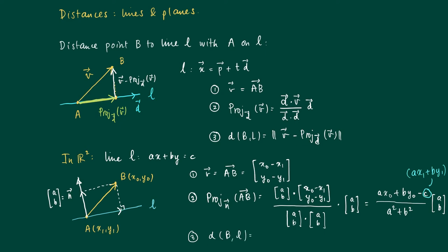Therefore we can calculate the distance of the point B to L as the length of the projection of AB on the normal vector N, which is the length of this vector. This equals the absolute value of A X zero plus B Y zero minus C divided by the square root of A squared plus B squared.